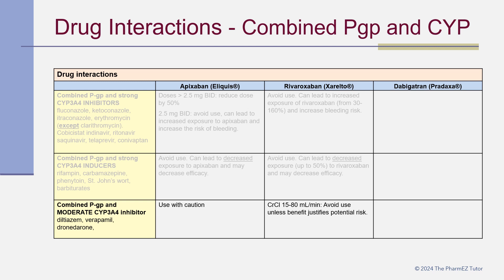Combined PGP and moderate CYP3A4 inhibitors include drugs such as diltiazem, verapamil, and dronedarone. Apixaban should be used with caution when combined with these drugs and rivaroxaban should be avoided. One key point: dabigatran does not require dose modification or avoidance when used with any of the combined PGP and CYP3A4 inhibitors, because dabigatran has minimal CYP metabolism and is primarily renally eliminated, thus avoiding these interactions.